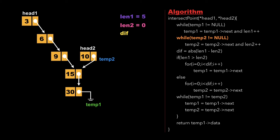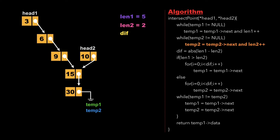We exit the first while loop and start another while loop for traversing linked list two, checking whether temp2 is not null. We update temp2 as temp2.next and increment length2, continuing this process until temp2 becomes null. At that point, the value of length2 is 3, and we exit the while loop.